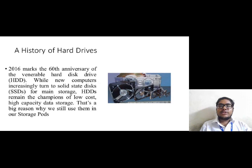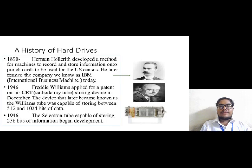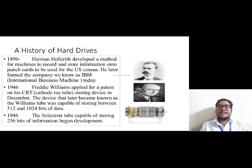Now let's discuss the history of the hard disk drive. The sixtieth anniversary of the hard disk drive was marked in the year 2016, where new computers increasingly turned into solid state disks, whereas the hard disk drives that were developed were of low cost but had high data storing capacity. Now let's discuss history in the form of a timeline. In the year 1890, a method for machines to record and store information into punch cards was developed by Herman Hollerith and it was used by the US Census. He later formed a company which we know as IBM, that is International Business Machines.